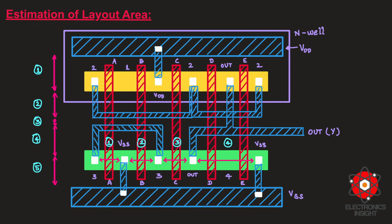An important observation is that we have an n-well region surrounding the p-diffusion layer and a p-well region surrounding the n-diffusion layer. For the n-well region there is space left both horizontally and vertically. To account for this in the horizontal and vertical track counts, we always add 1 — plus one for both the vertical track count and the horizontal track count.